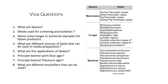Examples of lipase sources include mammalian sources such as horse, human, pig, and guinea pig pancreatic lipases. Fungal sources include Penicillium camembertii, Rhizomucor miehei, Rhizopus oryzae, and Aspergillus niger. Bacterial sources include Pseudomonas cepacia, Pseudomonas aeruginosa, Pseudomonas fragi, Staphylococcus aureus, and Staphylococcus epidermidis.